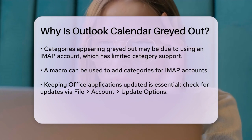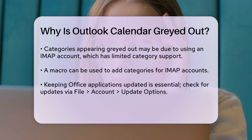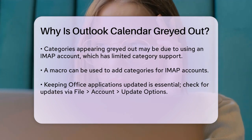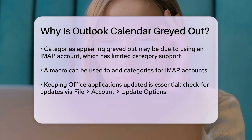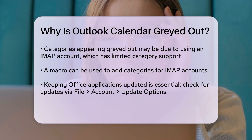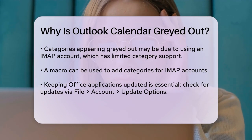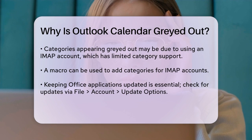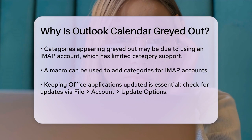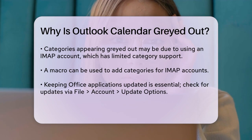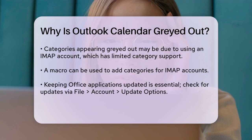Go to any Office app, click on File, Account, and select Update Options to update your software. If the problem persists, you might need to repair your Office installation by going to the Control Panel, selecting Programs and Features, right-clicking on your Office product, and then selecting Change Online Repair.